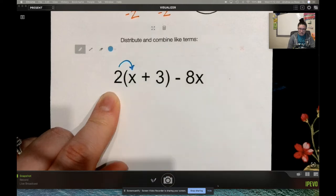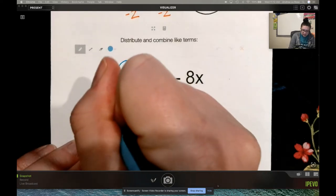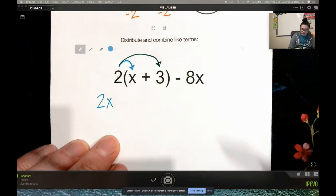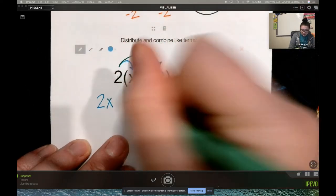So I take 2 times x, I get 2x. I take 2 times 3, I get 6.